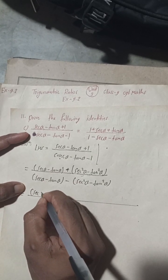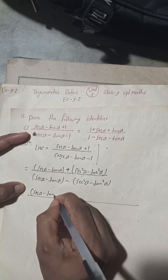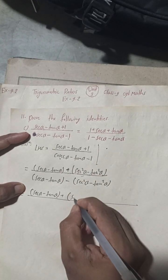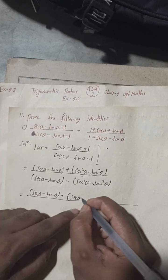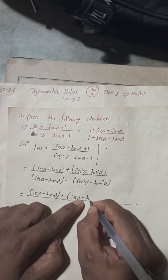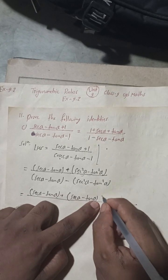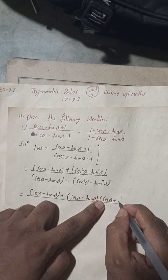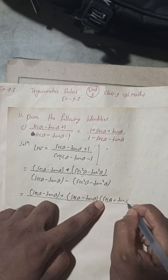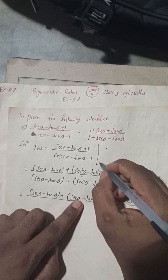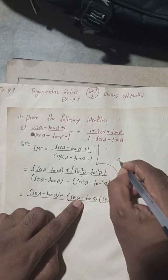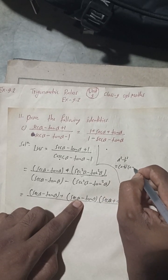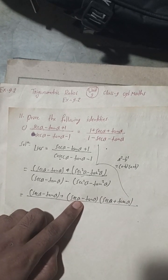This is sec α minus tan α, and this is a²minus b², so I can write sec α minus tan α into sec α plus tan α, because we know the formula a²minus b² equals a minus b into a plus b.